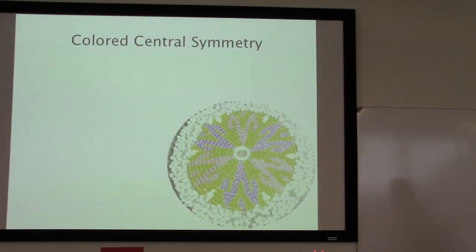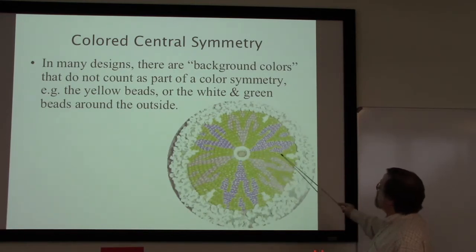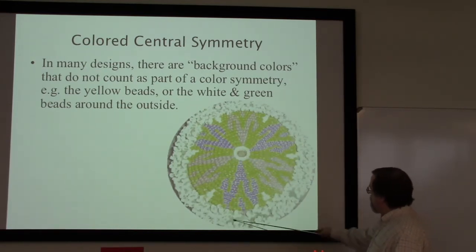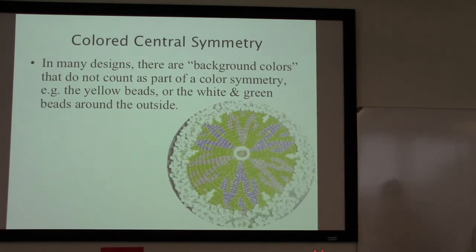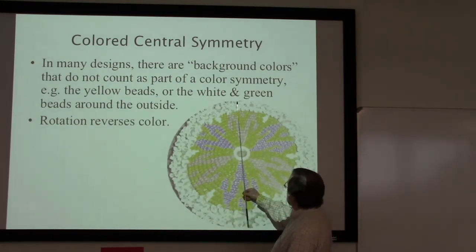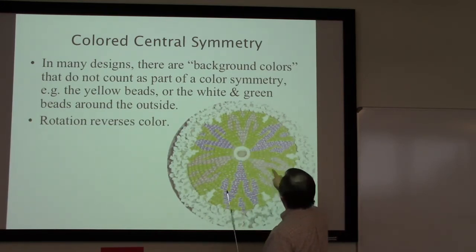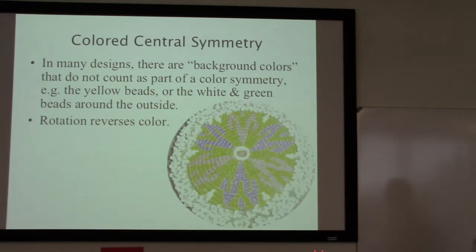Let's take a look at some examples, starting with central symmetries since those are always the easiest to examine. In this particular design there are yellow beads that are just part of the background — we won't consider them — and white beads around the outside of the circle. We're focusing on the pink beads and the blue ones. A rotation of this design takes this pink to a blue, and this blue went to a pink. If I continued: this pink goes to a blue, this pink to a blue, this pink to a blue. That's what we mean by perfect color symmetry — in this case it reverses the colors of those two motifs.